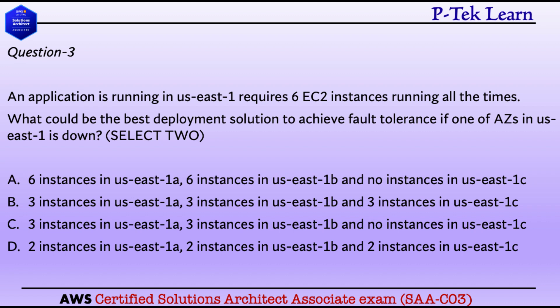Option A: 6 instances in US East 1A, 6 instances in US East 1B, and no instances in US East 1C. If US East 1A is down, we still have 6 instances running in US East 1B, which meets our requirement. Option B: 3 instances in US East 1A, 3 instances in US East 1B, and 3 instances in US East 1C. If one availability zone goes down, we still have two zones with 3 plus 3 — 6 EC2 instances up and running. This is also a valid option.